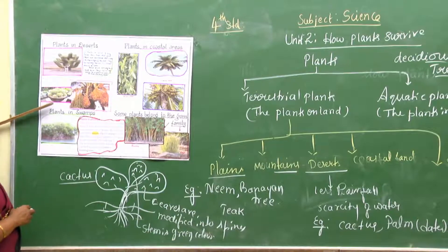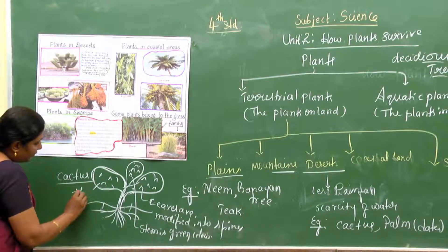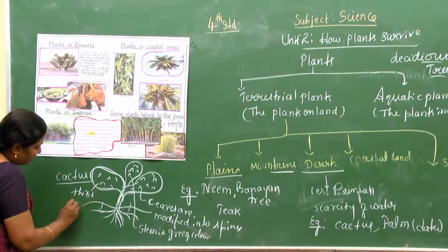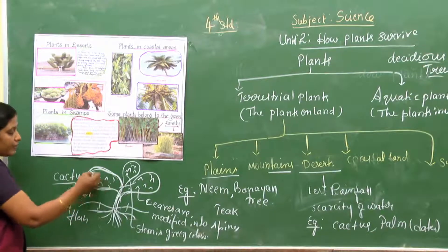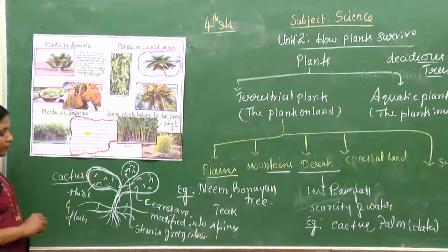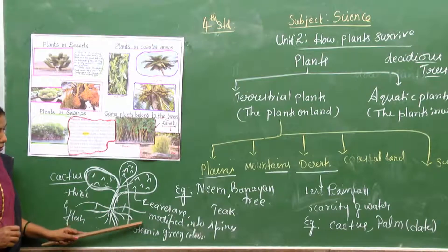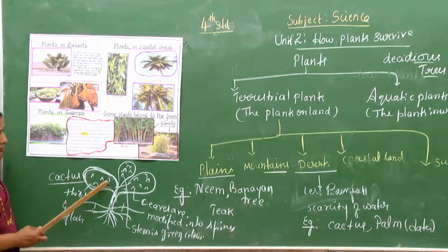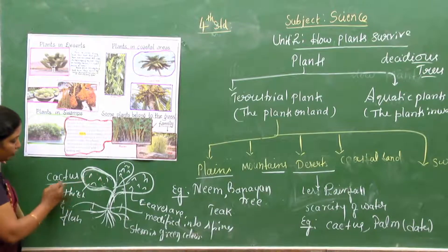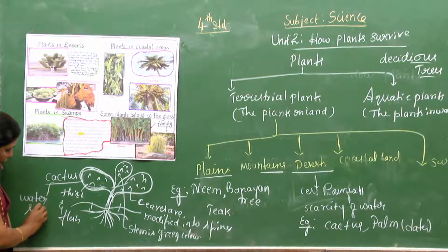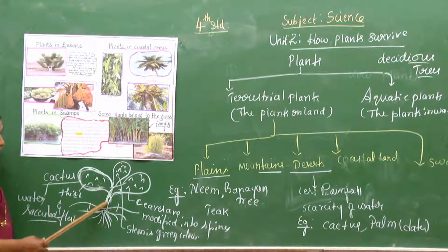The cactus stores food and water in its thick and fleshy stem. Much water is stored in the stem, and food is also stored there. So even when there is no rainfall, the water stored in the stem can be used for photosynthesis. Special tissues called water succulent tissues — water storing tissues — are present for their survival.